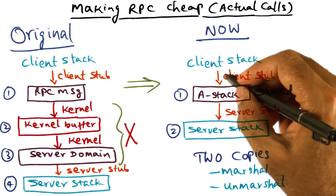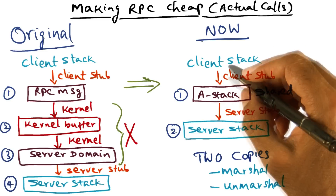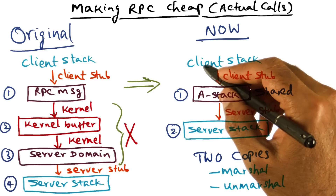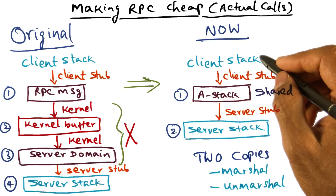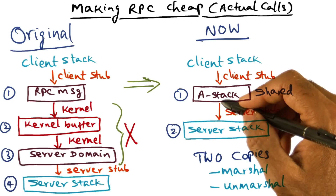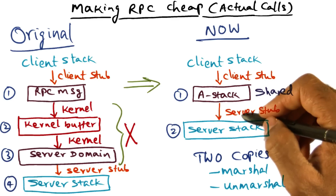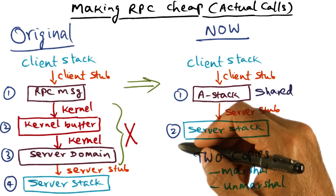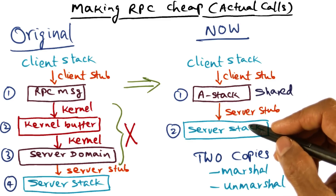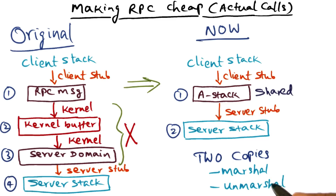Needless to say, the same thing is going to happen in the reverse direction for returning the results. The server stack will have the result, the server stub puts it into the A stack, and the client stub takes it from the A stack and gives it to the client so the client can resume its execution. So there are two copies involved going from the client to the server, and two copies involved going back from the server to the client.